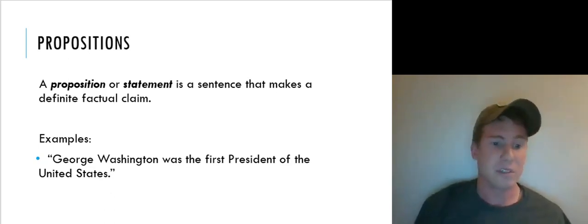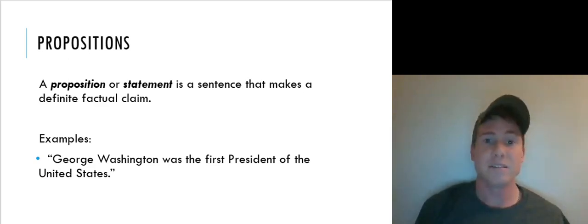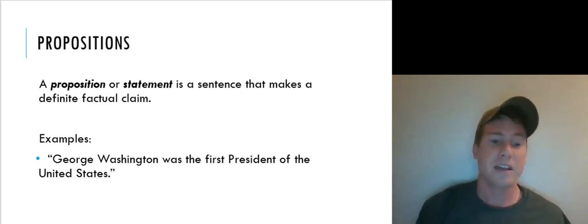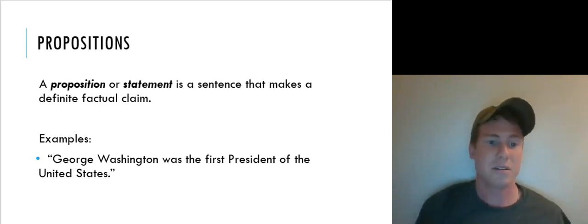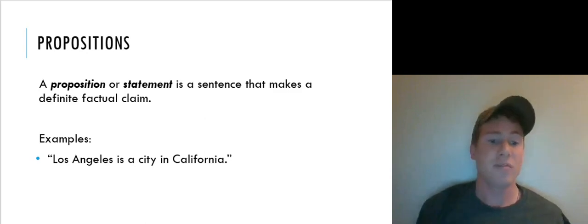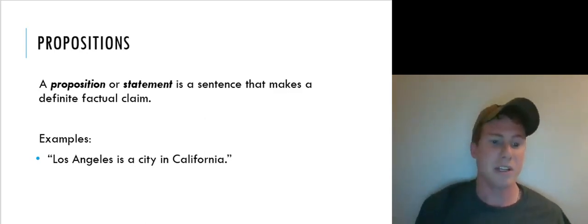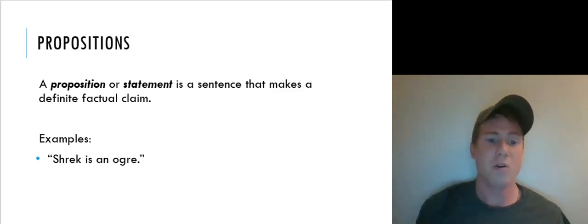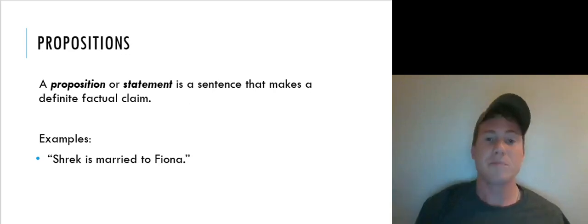Let's consider some examples. 'George Washington was the first president of the United States' — that's a paradigmatic example of a statement making a claim about George Washington, and this happens to be a true proposition. 'Los Angeles is a city in California' — another proposition. 'Shrek is an ogre' — another claim. 'Shrek is married to Fiona' — another statement.